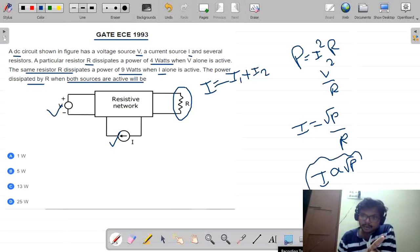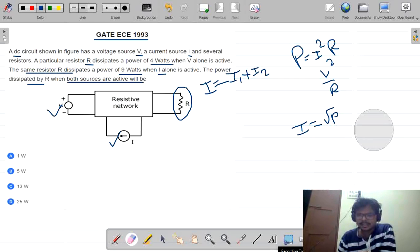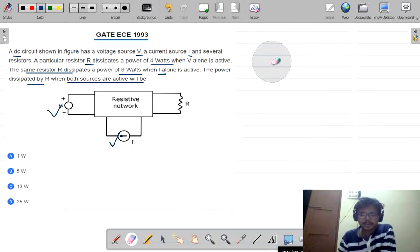I will tell the important trick here. What we need to do? When there is only a single power, we will just write it as P.